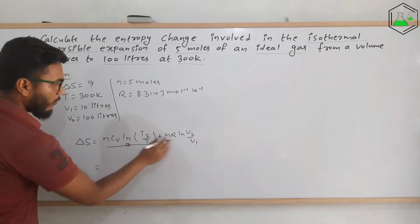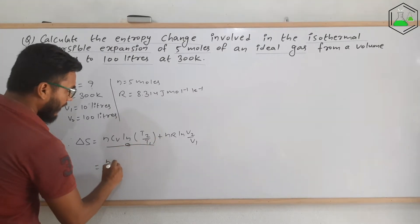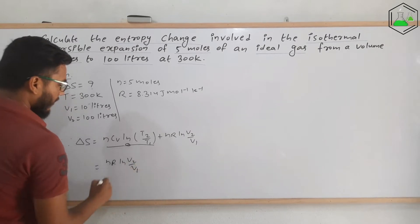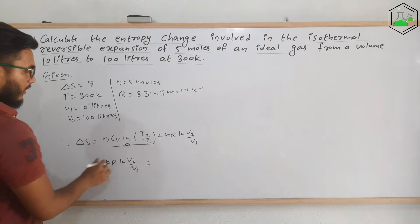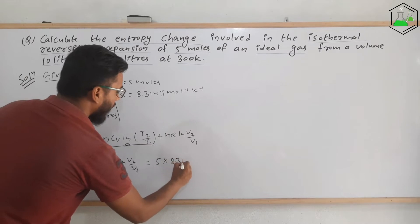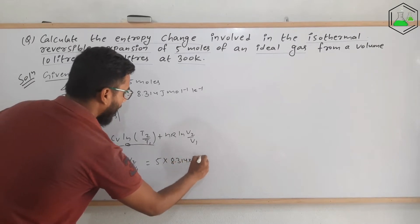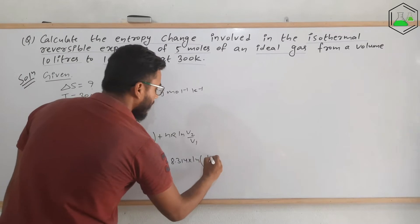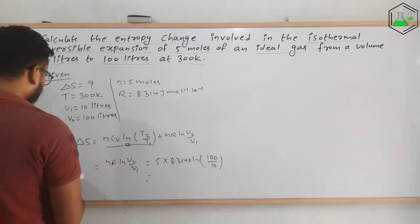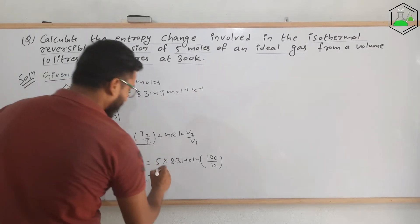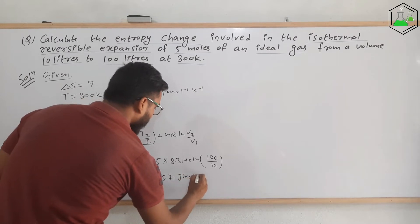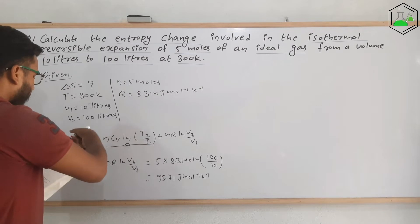Let us put in the given values: 5 × 8.314 × ln(100/10). If you put this on a calculator, you will directly get the value 95.71 J/mol/K. So this is the complete solution.